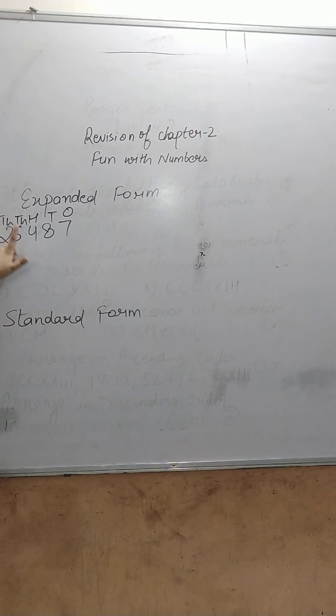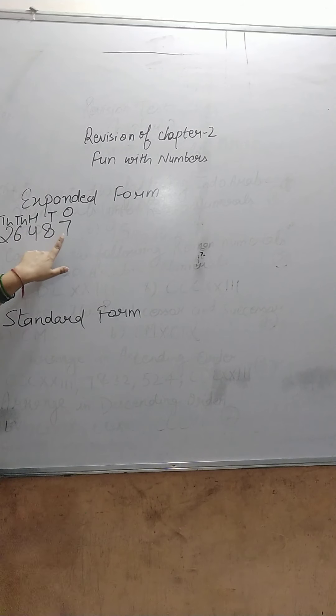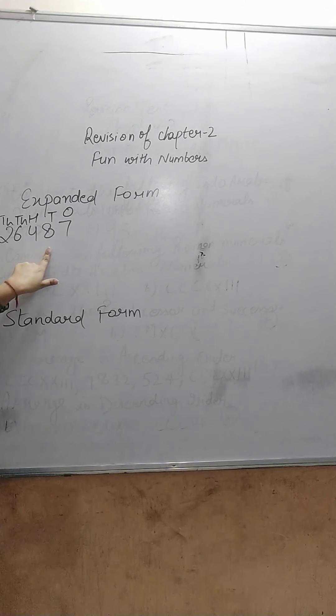2 is on the 10,000 place, 6 is on the 1,000 place, 4 is on the 100's place, 8 is on the 10's place, and 7 is on the 1's place. Now expand it according to its place values.